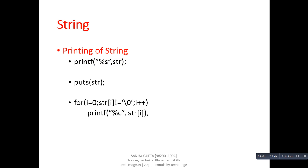For printing a string there are three methods. First is printf with percent s and the string name — this prints the string until the null character. The second function is puts, which is particularly for strings and also prints the string until null. The third method is a loop starting from zero with condition str[i] not equal to null — if the index is not equal to null, the particular character is printed, otherwise the loop terminates. We can use any of these methods to print a string on the console.